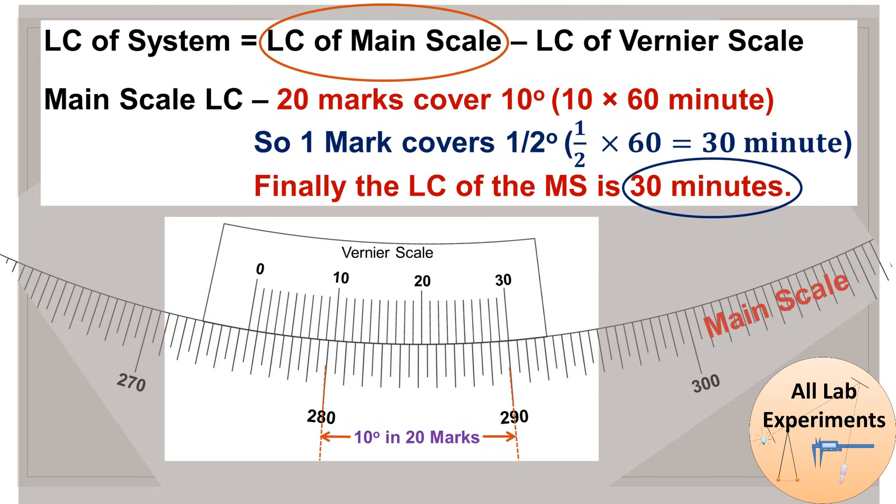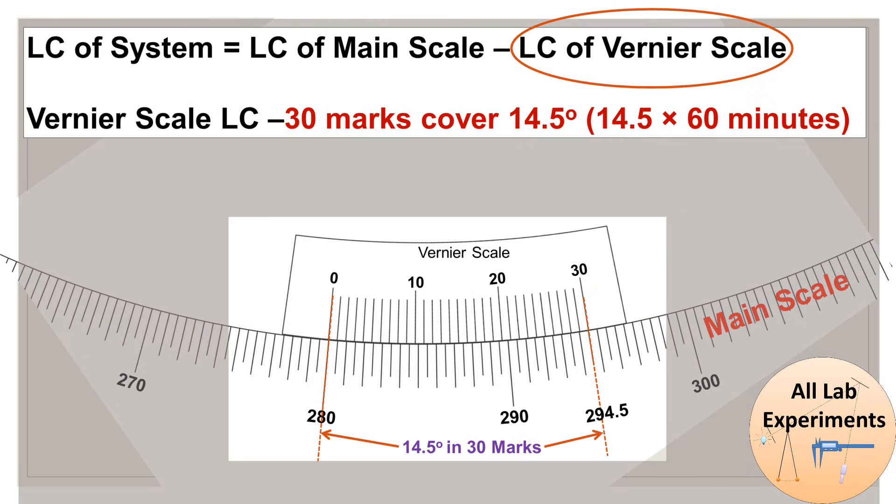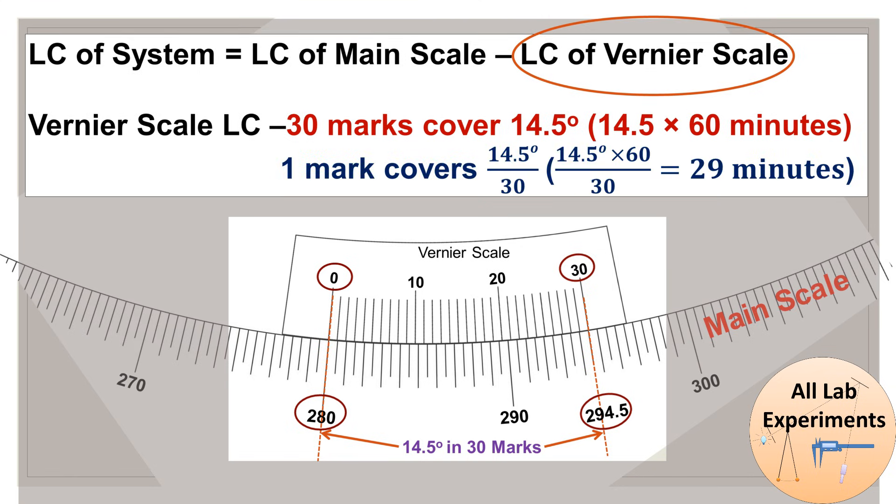After that we need the least count of vernier scale. In case of vernier scale there are 0 to 30, there are 30 marks. But what angle they cover on the main scale? In this figure from 0 to 30 marks it covers from 280 to 294.5. So in this way we can say 30 marks cover 14.5 degrees. According to unitary method, 1 mark will cover 14.5 divided by 30 degree, or similarly after some calculation it is 29 minutes.